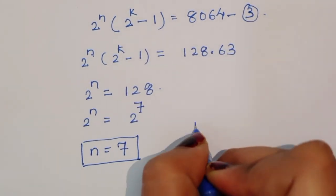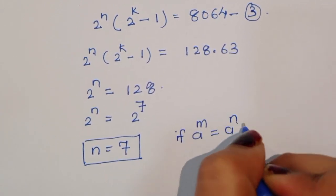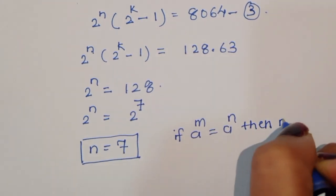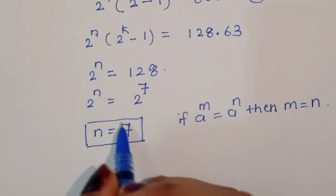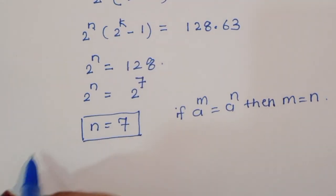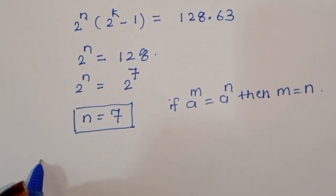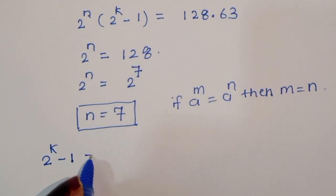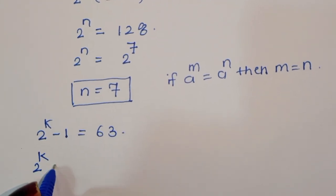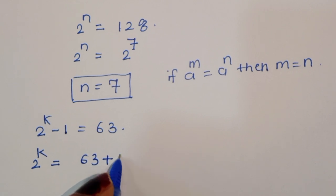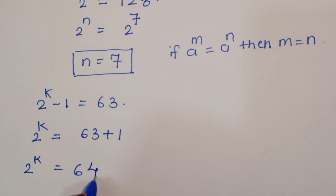Using the formula: if a power m equals a power n then m equals n. For the second factor, 2 power k minus 1 is equal to 63. So 2 power k is equal to 63 plus 1, which is 64.